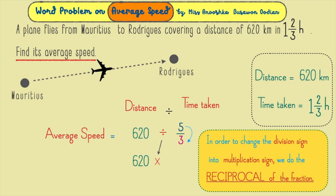In fact, it's better to change the division sign into multiplication sign. But first, you have to find the reciprocal of the fraction, which is easy to do. You just have to turn the given fraction upside down.